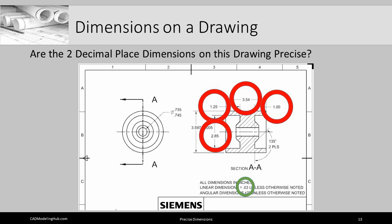If we look for a moment at the 1.25 dimension, that dimension has to be made within a range of 1.22 or up to a measurement of 1.28. And anything in that range would be considered a precise dimension as long as it falls within that range.